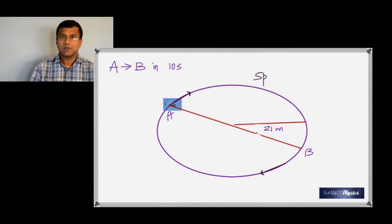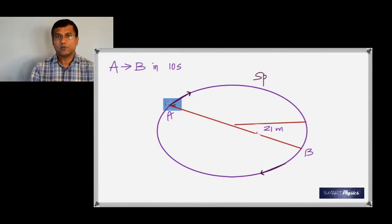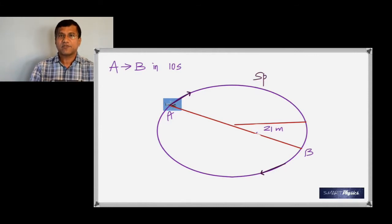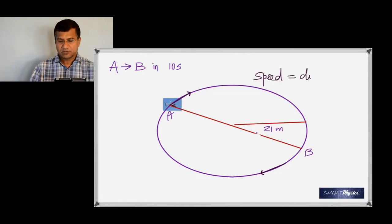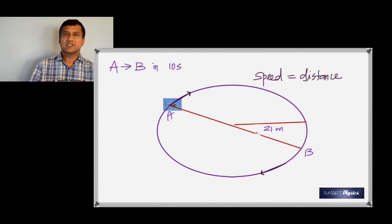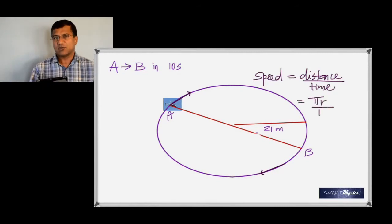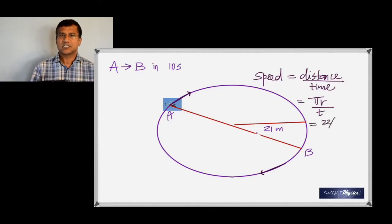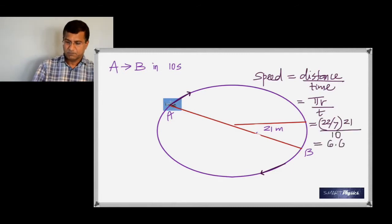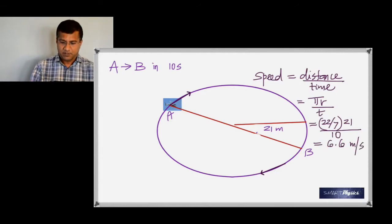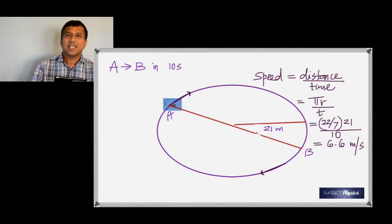Speed is distance over time. The distance is the semicircular path from A to B, which is half the circumference of the circle. Half the circumference is pi times the radius. Using pi as 22/7, the distance is pi multiplied by 21 meters divided by 10 seconds, giving a speed of 6.6 meters per second. No direction is needed.